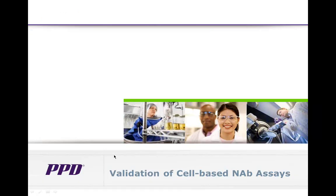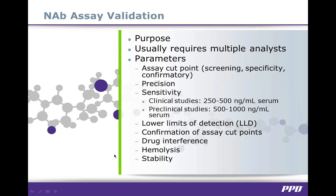Now that our assay has been fully developed, we can move to the actual validation step. Method validation is the process by which an analytical procedure employed for a specific test and a specific analyte is shown to be suitable for its intended use. Results from method validation can be used to measure the quality, reliability, and consistency of analytical results. Validating NAB assays is a complex multi-step process involving several scientists in order to evaluate assay robustness, and the parameters assessed during validation are shown on this slide.